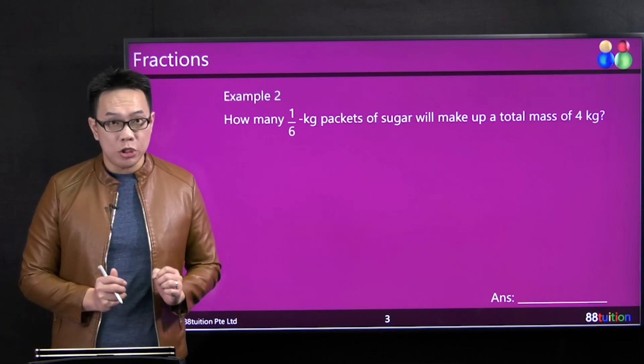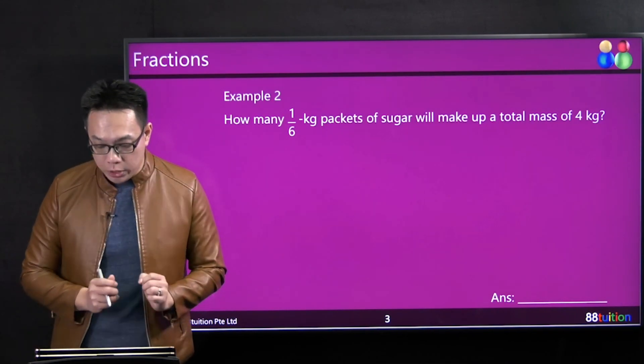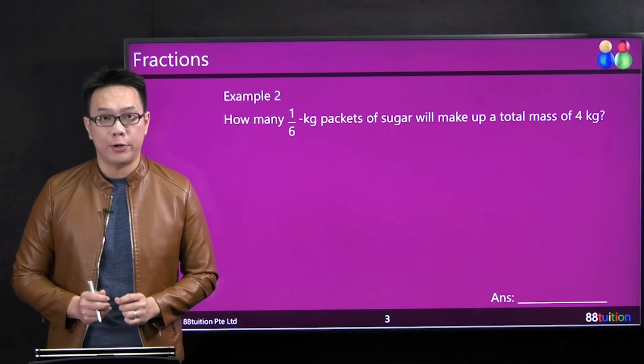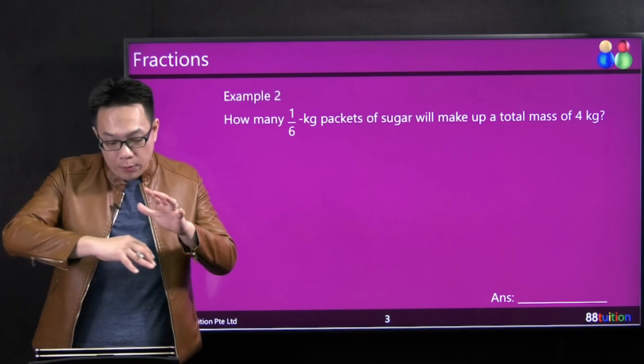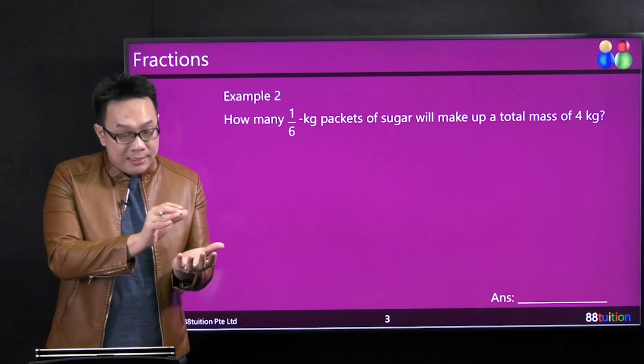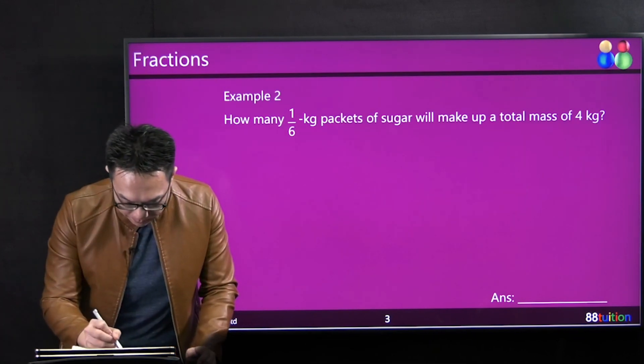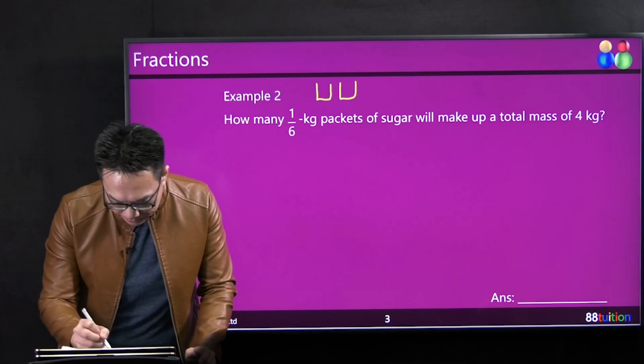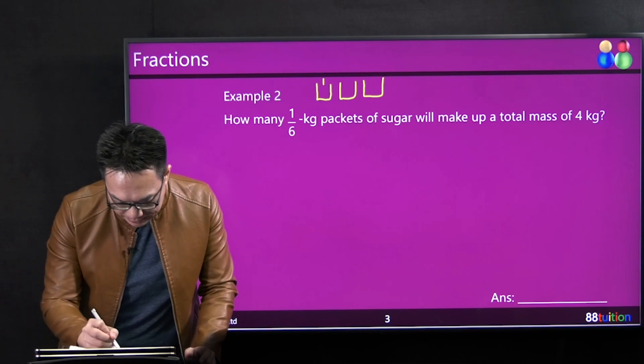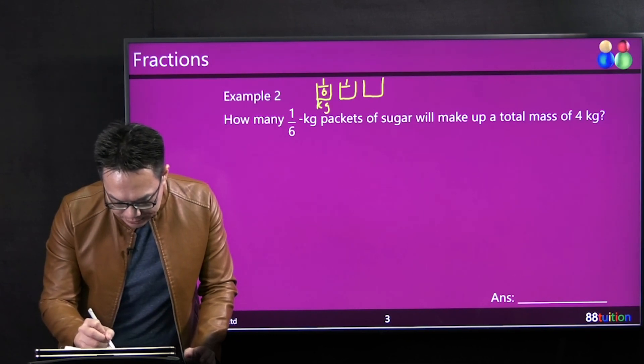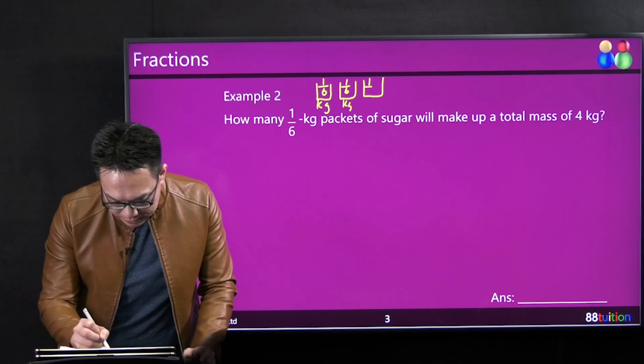How many 1/6 kg packets of sugar will make up a total mass of 4 kg? So you have all these little packets, each containing 1/6 kg inside.